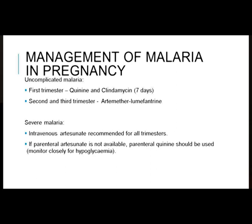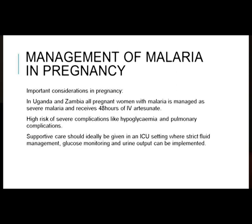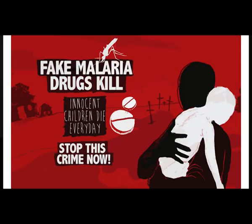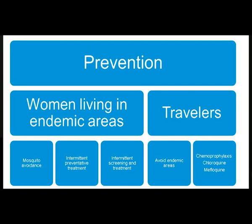Important considerations in pregnancy: in Uganda and Zambia, all pregnant women with malaria are managed as severe malaria and receive 48-hour IV artesunate. There is a high risk of severe complications like hypoglycemia and pulmonary complications, and supportive care in an ICU with strict fluid management, glucose monitoring, and urine output monitoring is essential. A big challenge in Africa is fake malarial drugs.